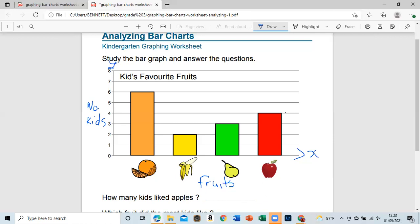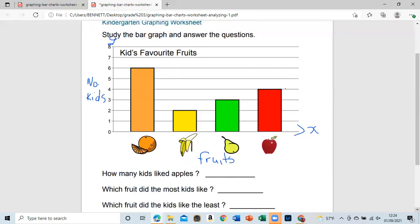Let's look at the first question. You guys can go ahead and try. First question says, how many kids liked apples? So first, we have to go to apple. This is apple. Go up and go across, so we're going to read it. So that's four. Four kids liked apples.